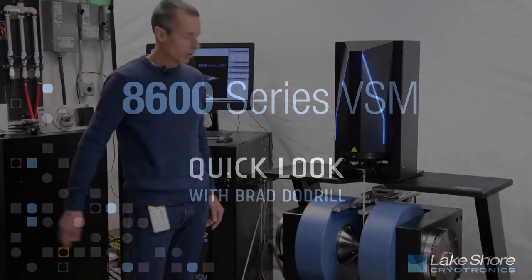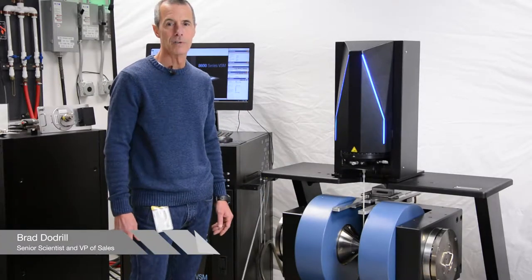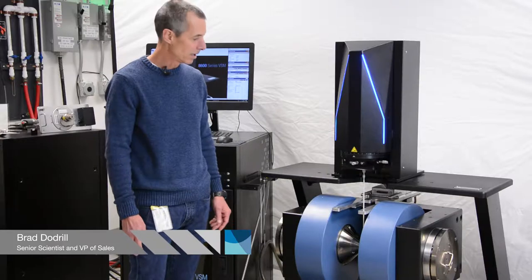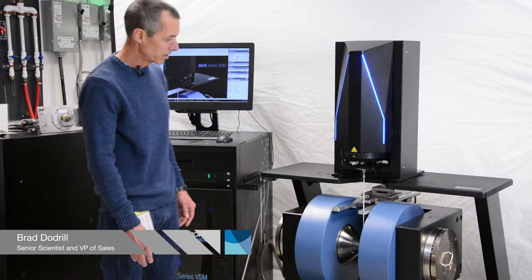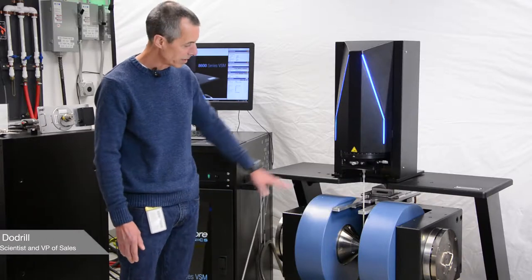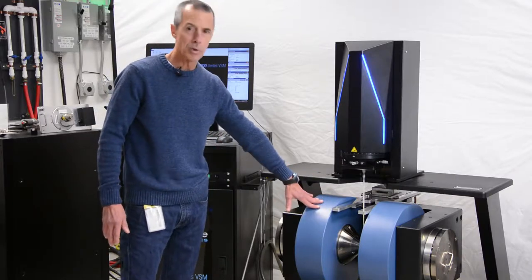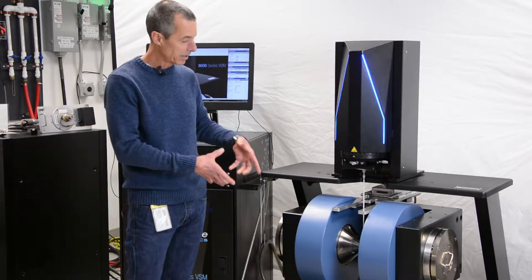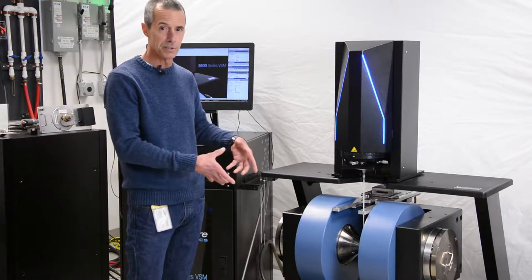I'm going to give you a brief overview of Lakeshore's new Vibrating Sample Magnetometer, the Series 8600 VSM systems. What you are seeing here is what we call the 8607, which resides on a settable gap 7-inch electromagnet. The magnet poles are 7 inches in diameter.